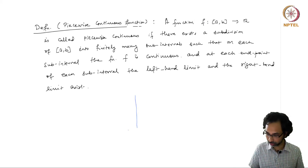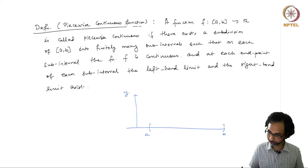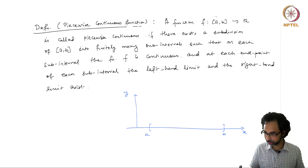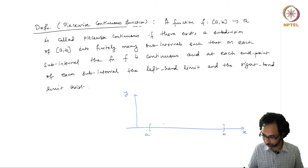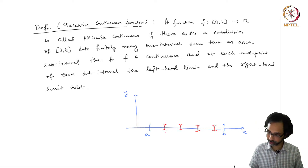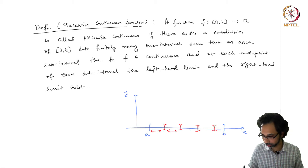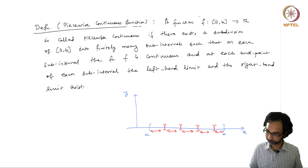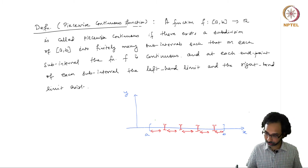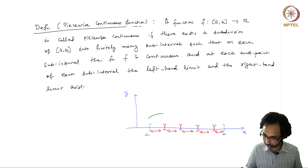Let me redraw. This is our a, this is our b. If we can divide this interval [a, b] into finitely many pieces like this, each such subinterval is a part of the subdivision. Our graph of this function f, which is now a piecewise continuous function, will look something like this.